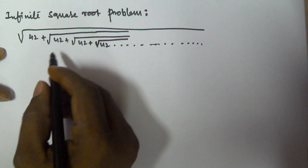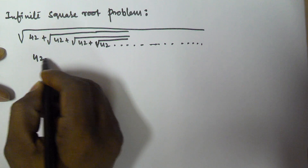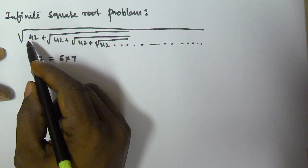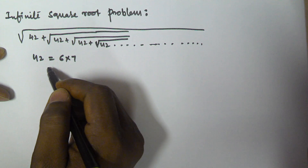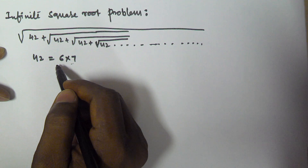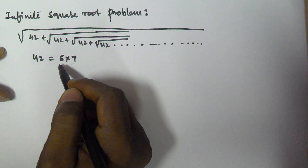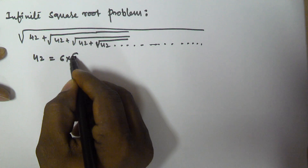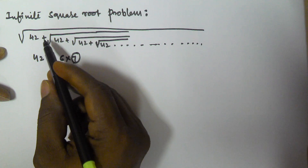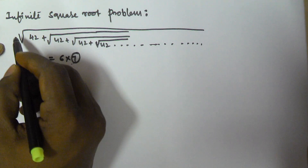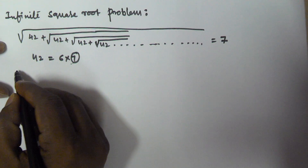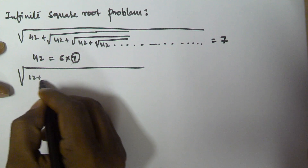The answer for this infinite square root problem is simple. The number 42 can be written as 6 times 7. First, we check if the given number can be written as a multiple of two consecutive numbers. If it can, then the bigger of the two consecutive numbers becomes the answer. So here the answer is 7.